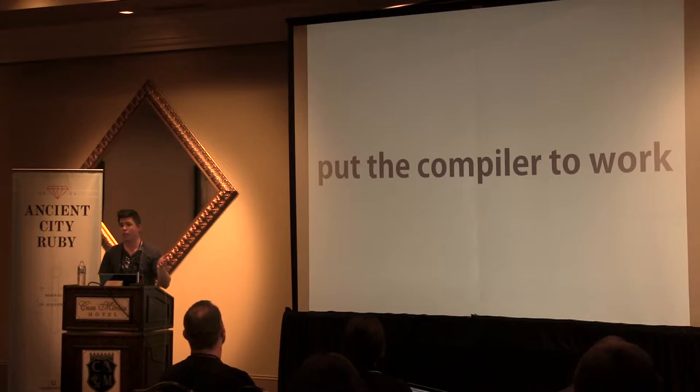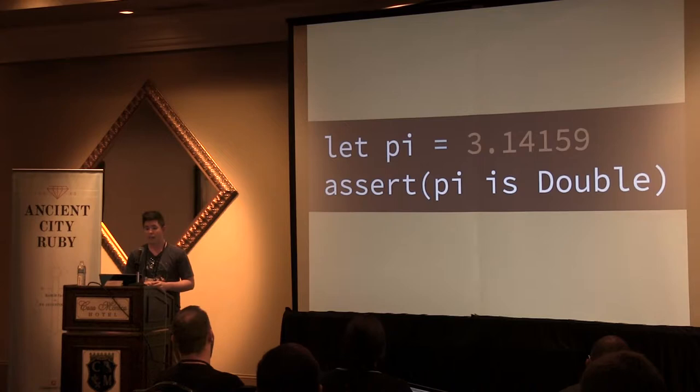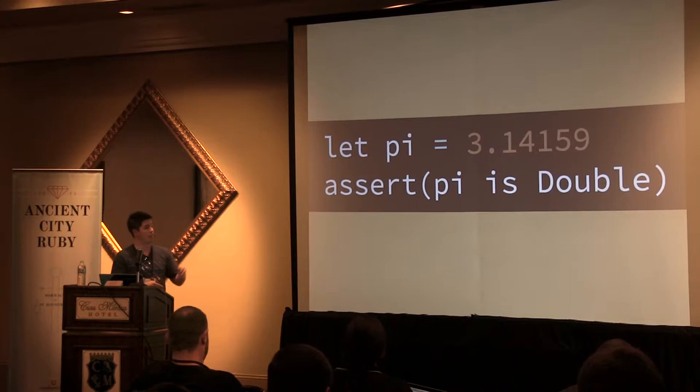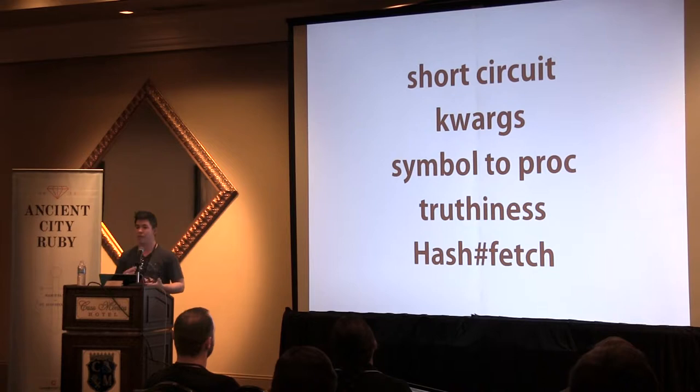With type inference, you can just leave the type off the constant pi. Since we're assigning it a literal double value, Swift infers that type to be double. That's the groundwork. We can now build on that and see some Ruby examples. We'll talk about short circuiting, keyword arguments, the symbol to proc, truthiness, and then finally hash fetch, which is a method that I really love in the Ruby language.